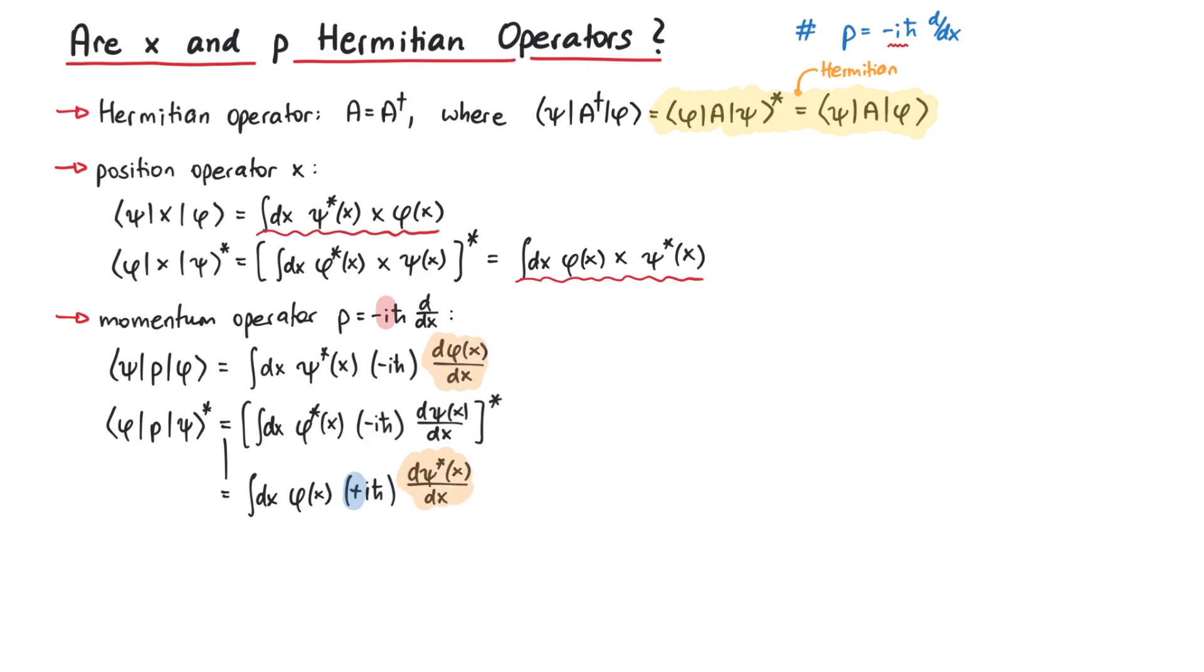In order to move the derivative around, we can perform a partial integration. The first term vanishes, since we have to evaluate the wave functions at infinity.